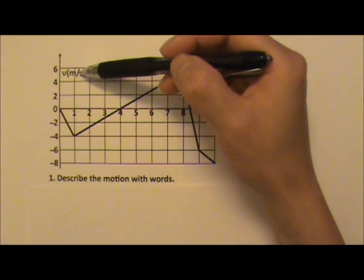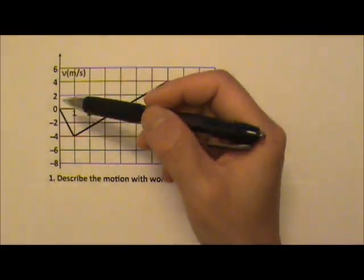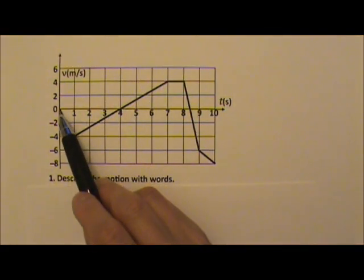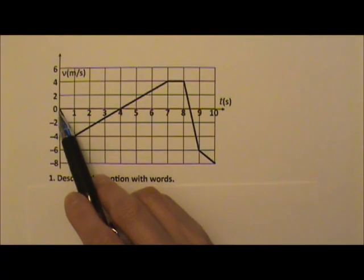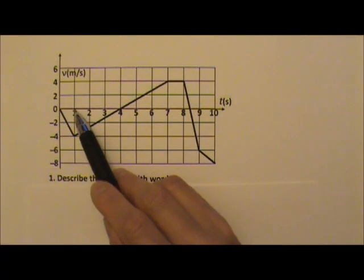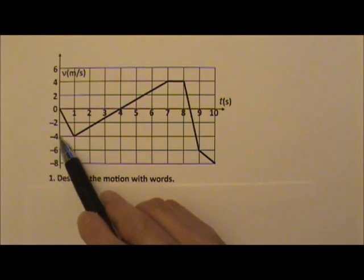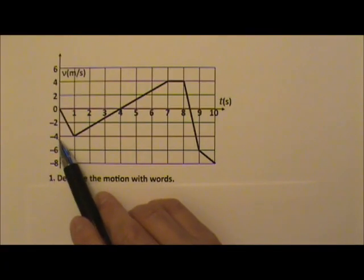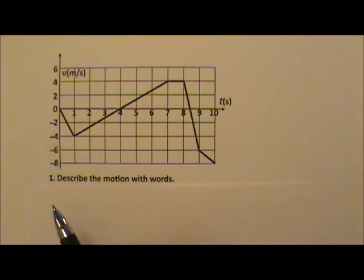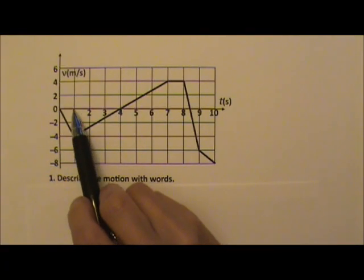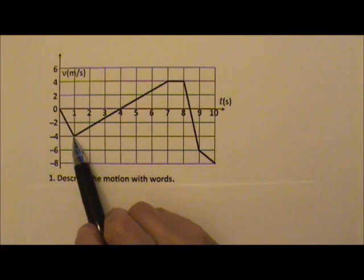This is a velocity graph, so the graph tells you the velocity. At the beginning, the velocity is zero, meaning the object starts at rest. At t equals 1, the object would have a velocity of negative 4 meters per second, meaning it's traveling at 4 meters per second in the negative x direction. So for the first second, it speeds up from rest to 4 meters per second traveling in the negative x direction.